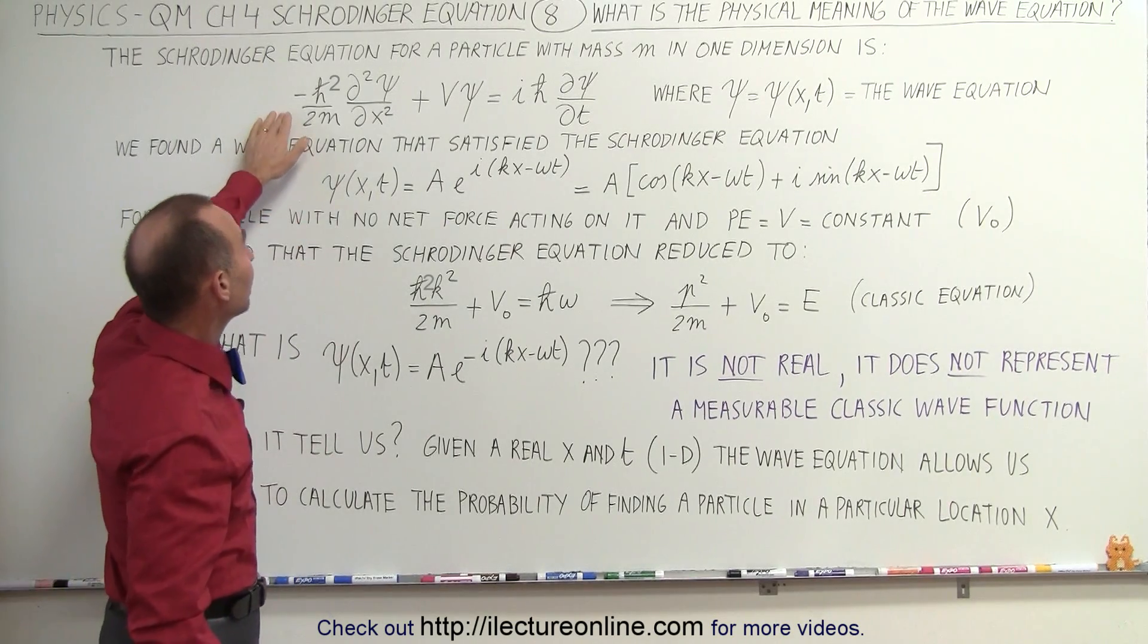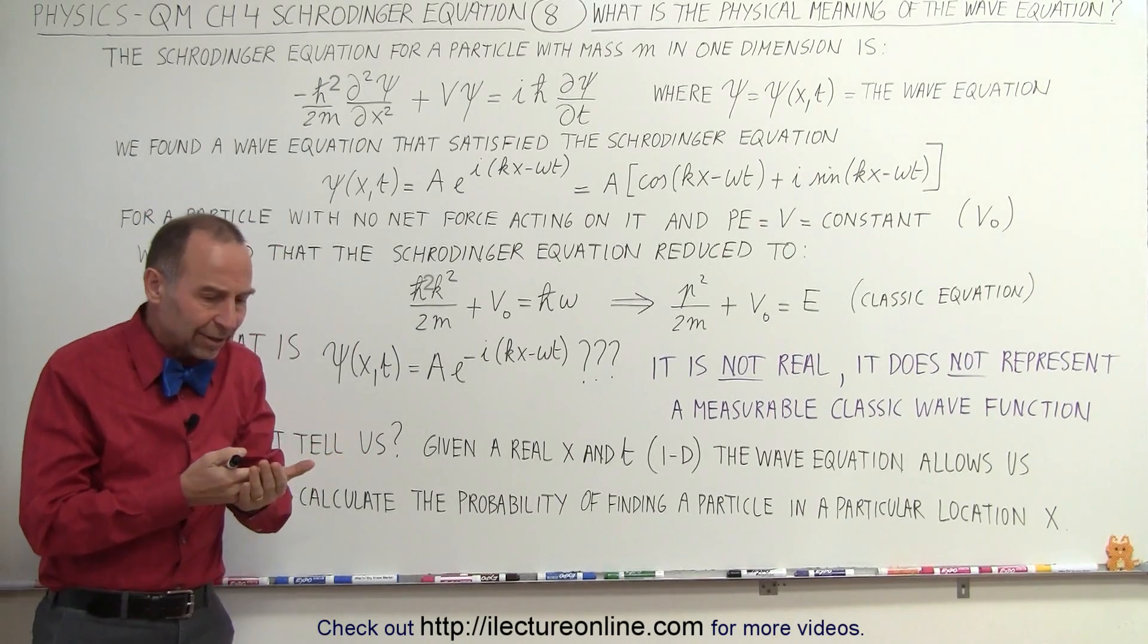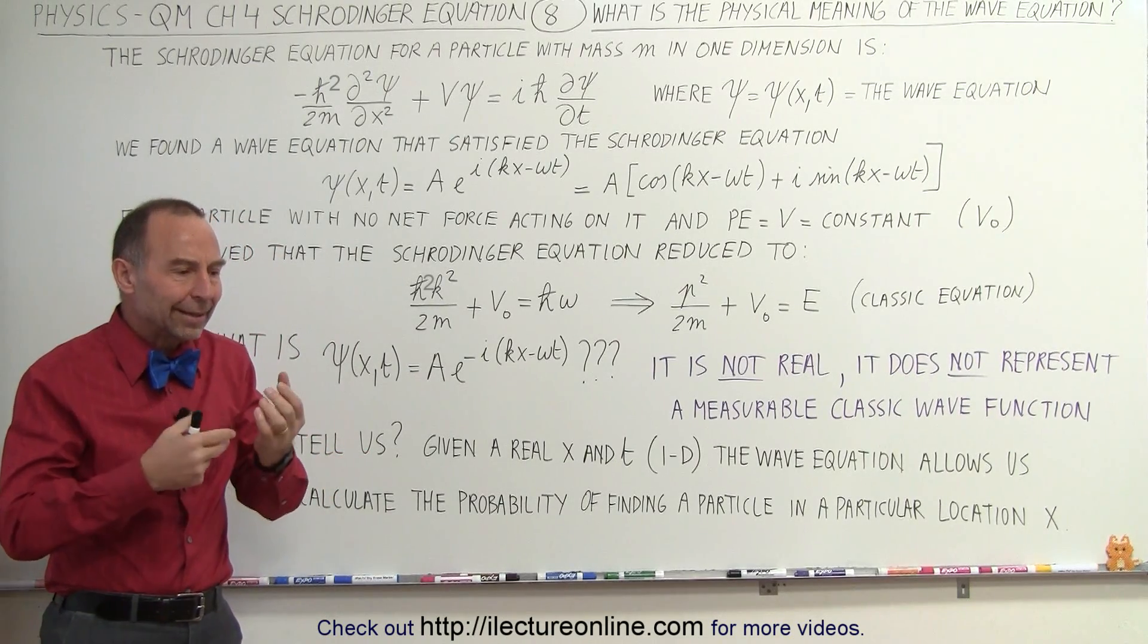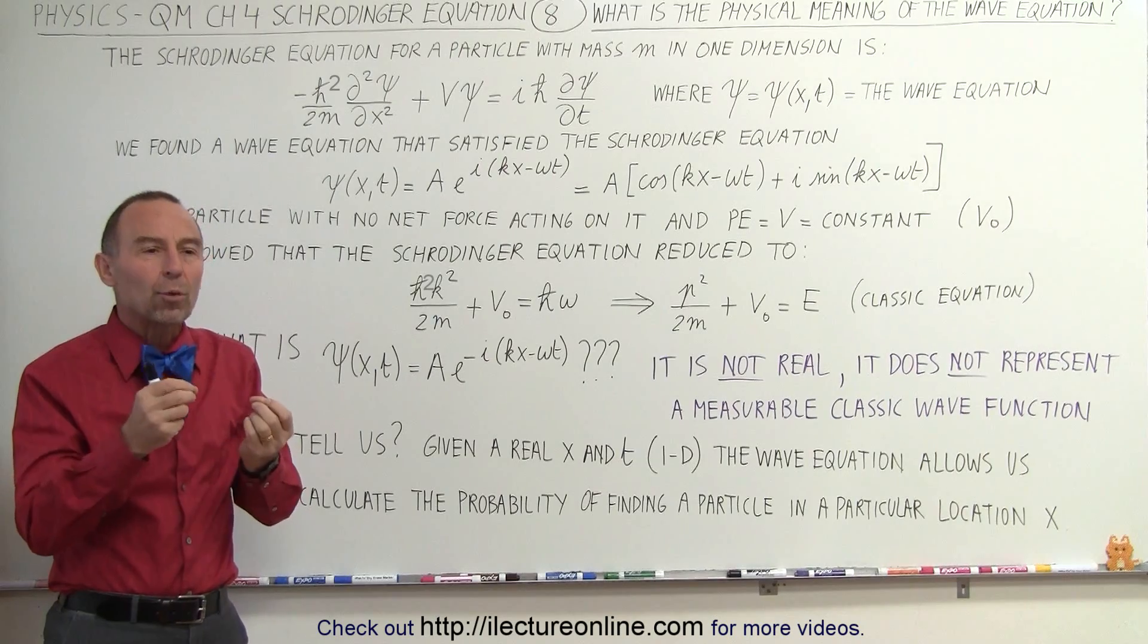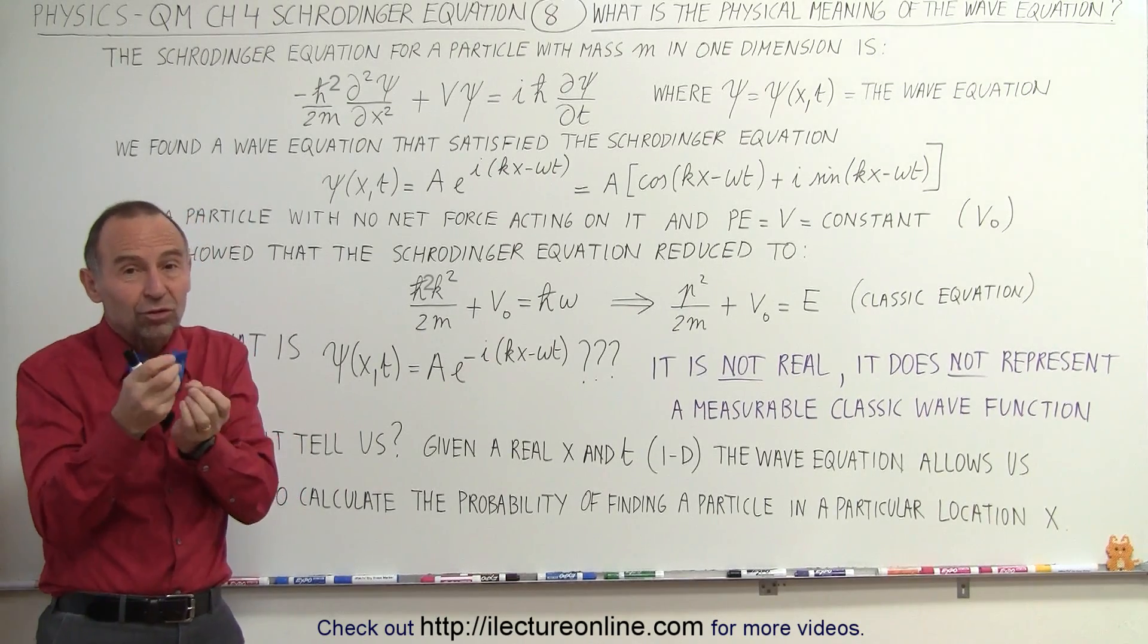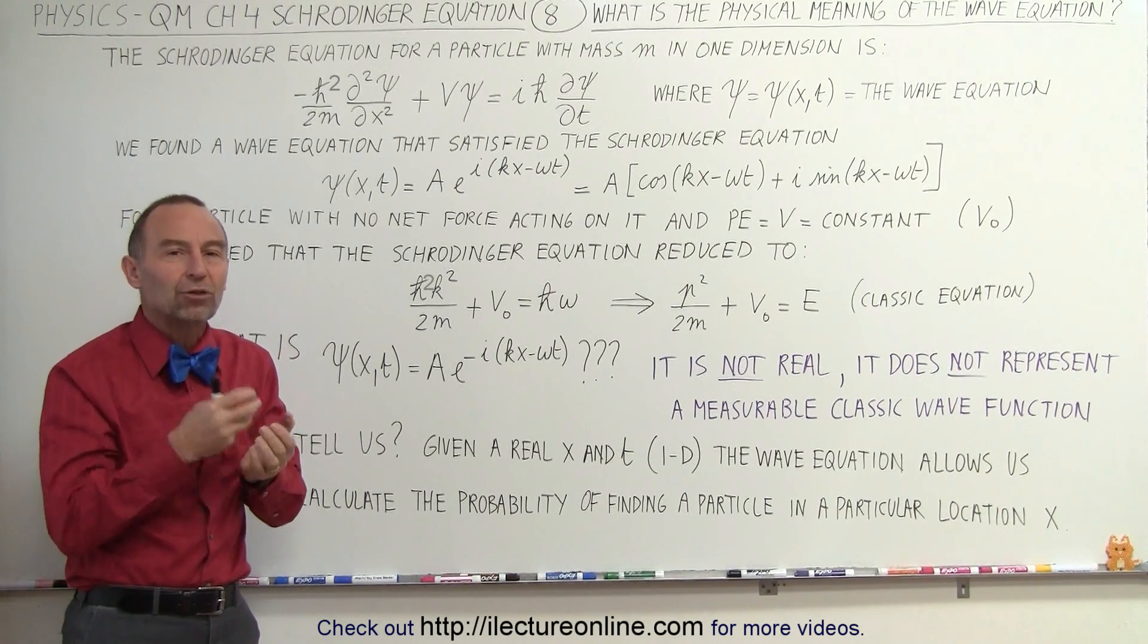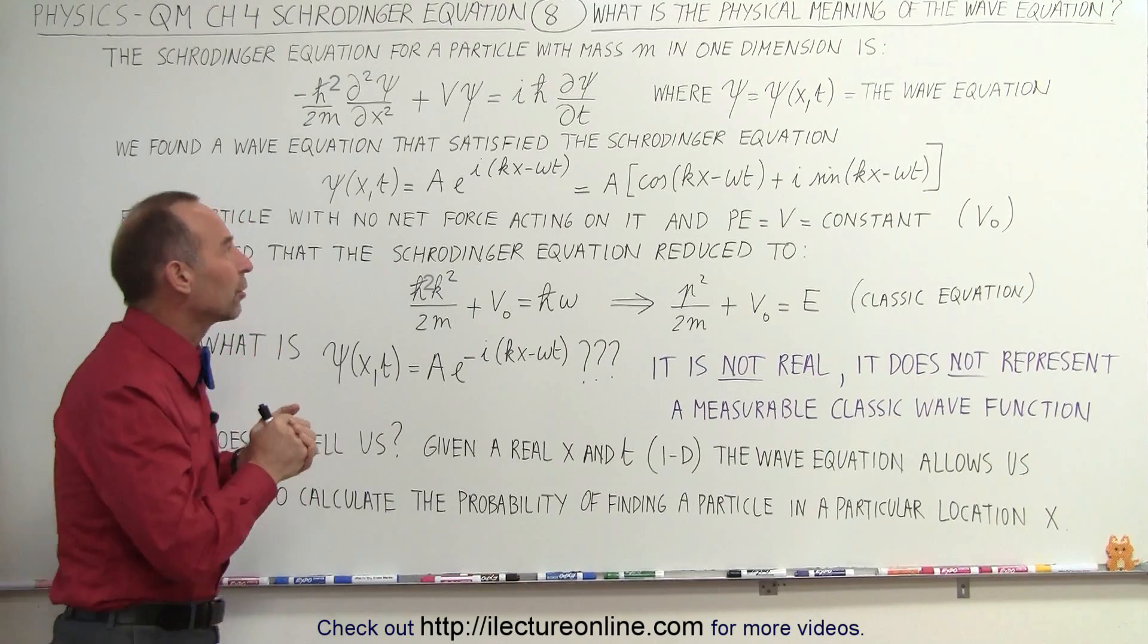And this is it here. A Schrodinger equation is like a differential equation that operates on the wave equation. The wave equation should satisfy the differential equation or should satisfy the Schrodinger equation.